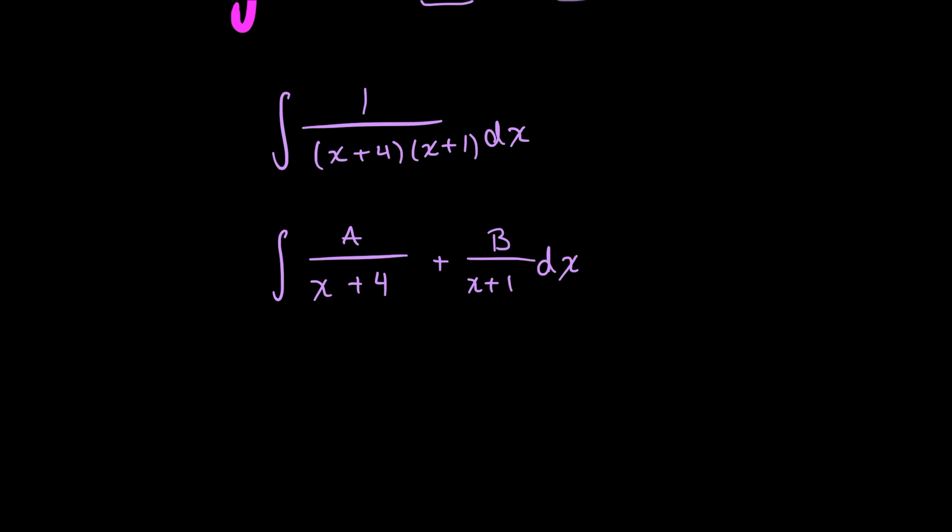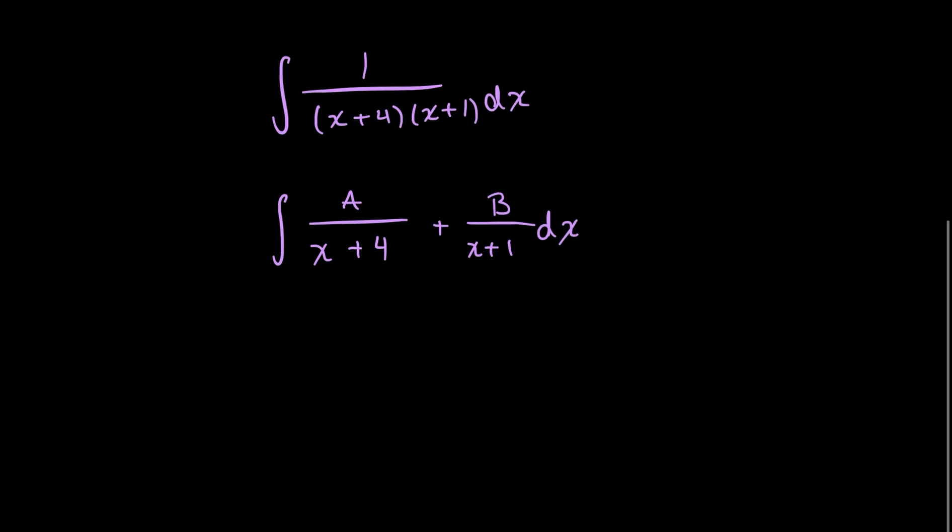And to fully integrate this, I'm going to look for these unknown constants a and b first. And to do that, I would be combining these two fractions into one by finding the common denominator between the two. So I just multiply each one of these fractions by the denominator of the other.